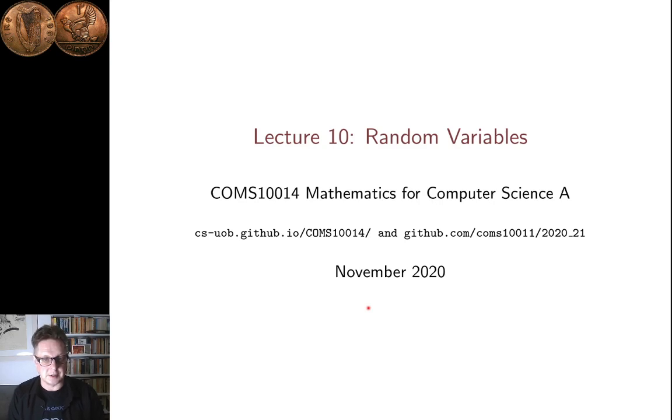Hi, I'm Conor Houghton. This is lecture 10 in the Probability and Combinatorics section of our Unit Mathematics for Computer Science A. This will be a very short lecture introducing random variables.